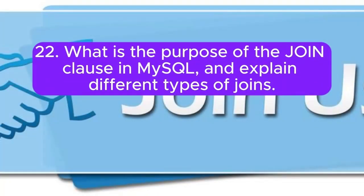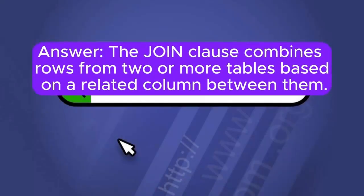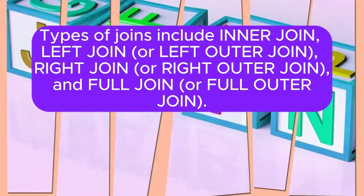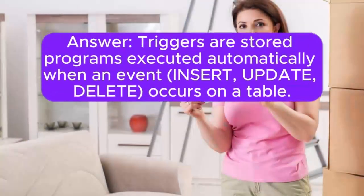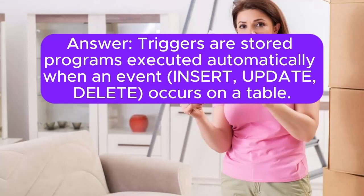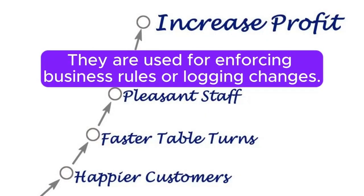Question 22: What is the purpose of the JOIN clause in MySQL, and explain different types of joins? Answer: The JOIN clause combines rows from two or more tables based on a related column between them. Types of joins include INNER JOIN, LEFT JOIN (or LEFT OUTER JOIN), RIGHT JOIN (or RIGHT OUTER JOIN), and FULL JOIN (or FULL OUTER JOIN). Question 23: Explain the use of triggers in MySQL. Answer: Triggers are stored programs executed automatically when an event (INSERT, UPDATE, DELETE) occurs on a table. They are used for enforcing business rules or logging changes.